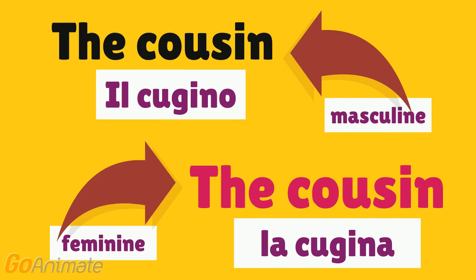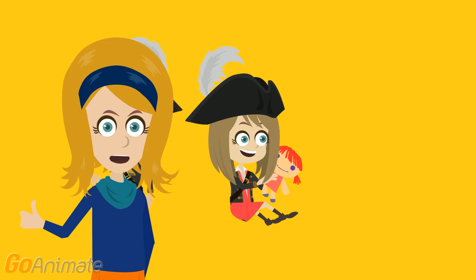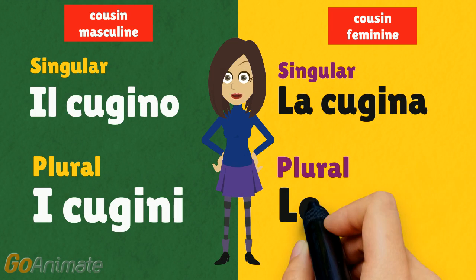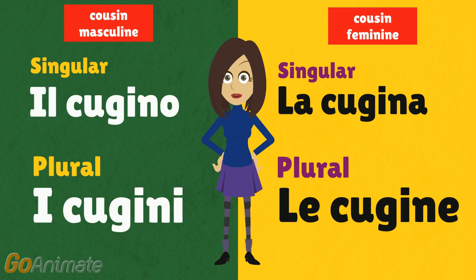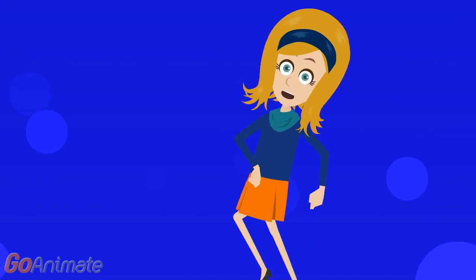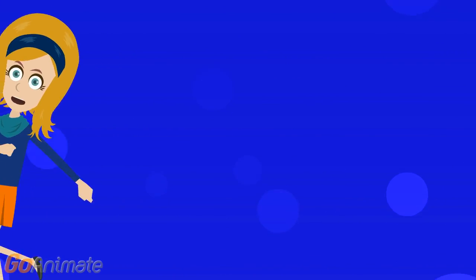In this big family there are also the cousins. A cousin is a perfect playmate — in Italian they are... These are the basics to know the Italian family. Here we have described only the closer relatives.